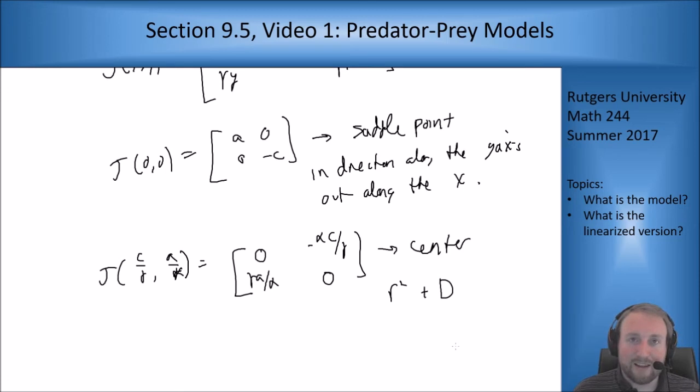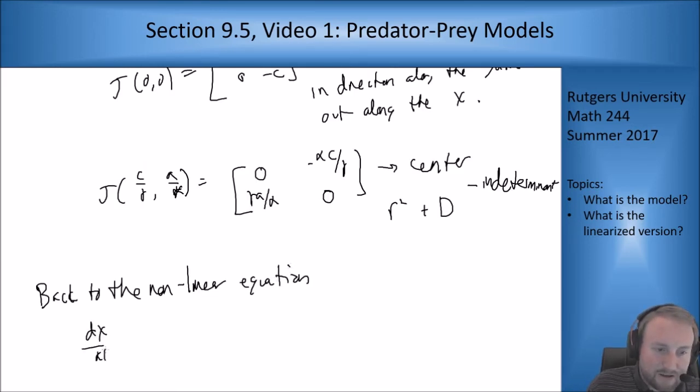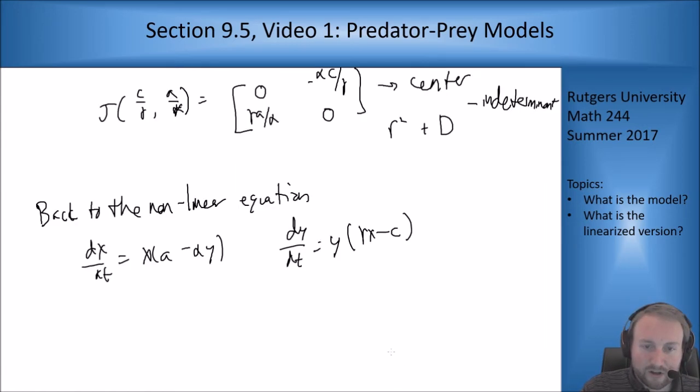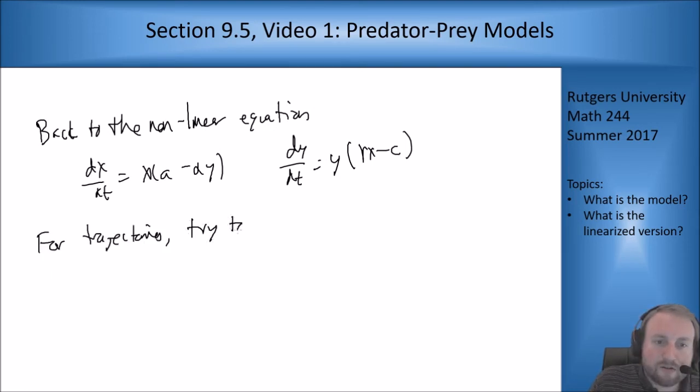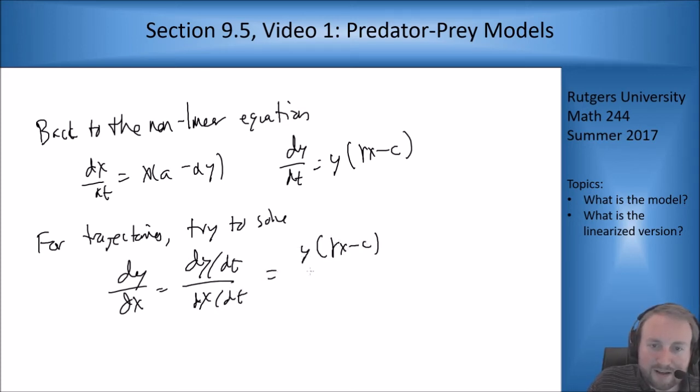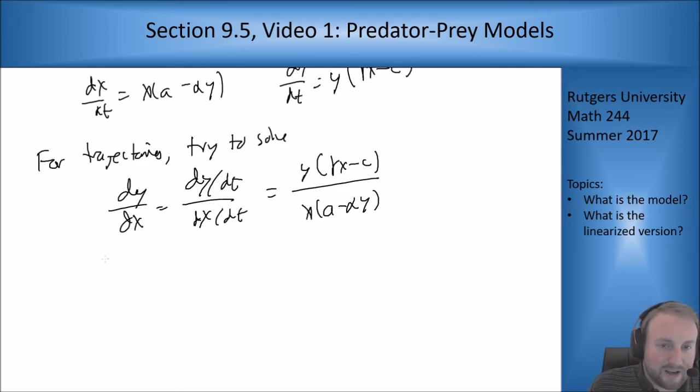So in order to figure out what's actually going to happen let's look at the fully non-linear equation and see if we can do trajectories on the non-linear equation. So we had for our equations dx/dt is x(a minus alpha y) and dy/dt is y(gamma x minus c). And so now we're going to try to do the trajectory thing we did at the end of section 9.2. So for trajectories try to solve dy/dx equals dy/dt over dx/dt which is y(gamma x minus c) over x(a minus alpha y). Now it turns out this is separable and if you separate you get (a over y minus alpha) dy equals (gamma minus c over x) dx.